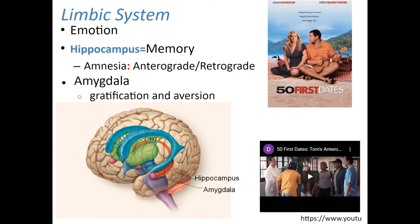Moving deeper into the cerebrum, the limbic system has two major pieces: the hippocampus and the amygdala. The hippocampus is associated with memory retention — damage causes amnesia, which comes in two varieties: retrograde amnesia (forgetting everything from the past) and anterograde amnesia (the inability to form any new memories).